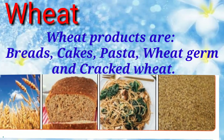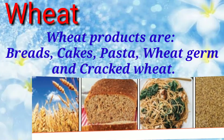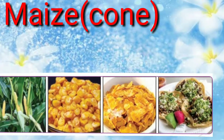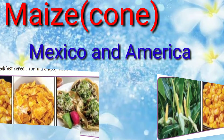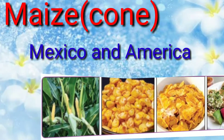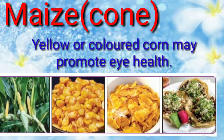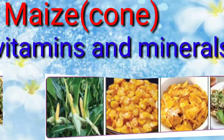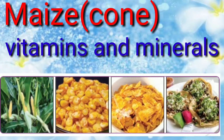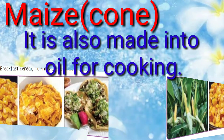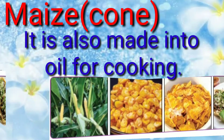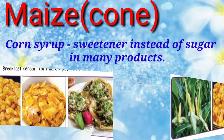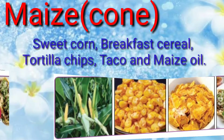Next is maize — its other name is corn. In many tropical and subtropical countries like Mexico and America, maize is the main food people eat. Yellow or colored corn may promote eye health. It also contains many vitamins and minerals, and is made into oil for cooking. Corn syrup is used as a sweetener instead of sugar in many products.